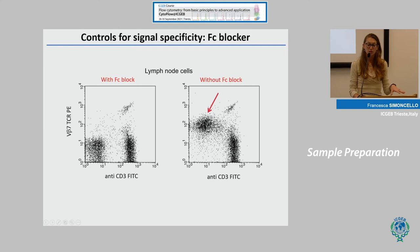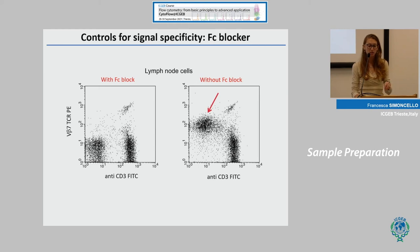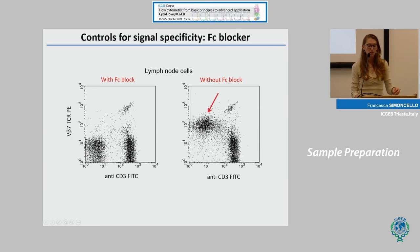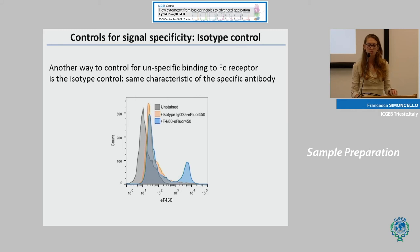As a practical example: in this dot plot you can see a population that is negative for CD3 — a T-cell marker — but positive for Vβ7 TCR, which is quite strange. You realize this population is just an artifact, because when you treat your cells with the Fc blocker reagent before extracellular staining, this population disappears. So it's very important to add controls for signal specificity during your analysis. Another way to control for non-specific Fc receptor binding is to use an isotype control.